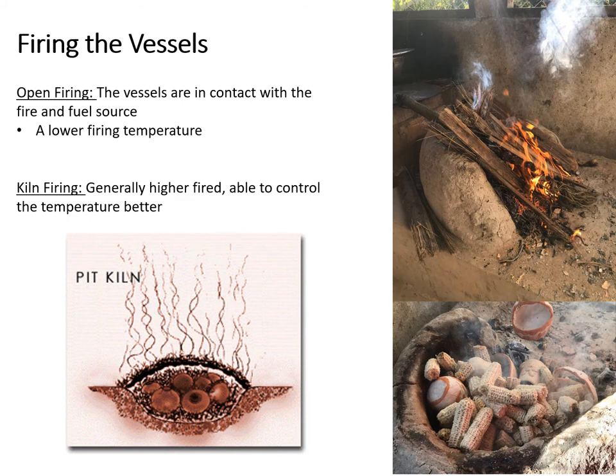There are a few different ways to fire a ceramic vessel, and these different methods leave traces on the pottery. Some of the traces, like fire clouding on the exterior of vessels, are visible with the naked eye; others can be identified under the microscope. In general, vessels fired in an open fire were fired at a lower temperature than those in a kiln. Potters could also better control the temperature if they fired their ceramic vessels in a kiln.